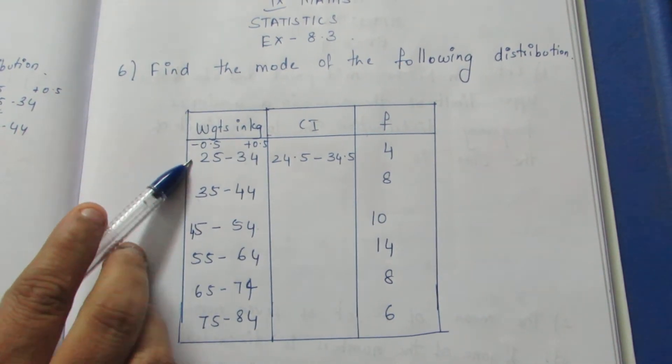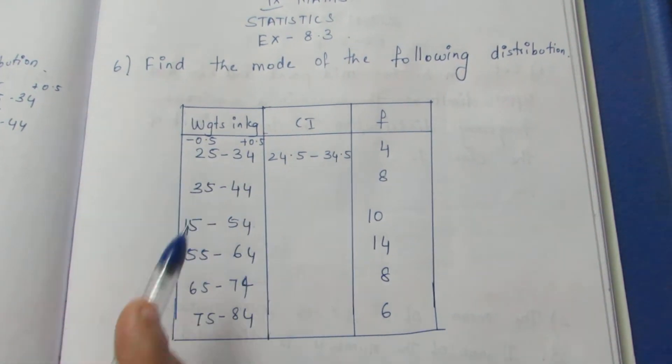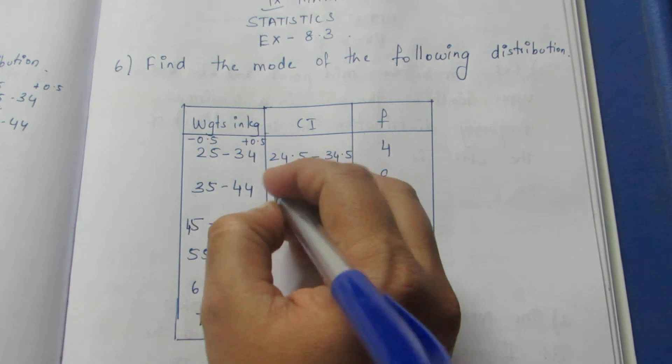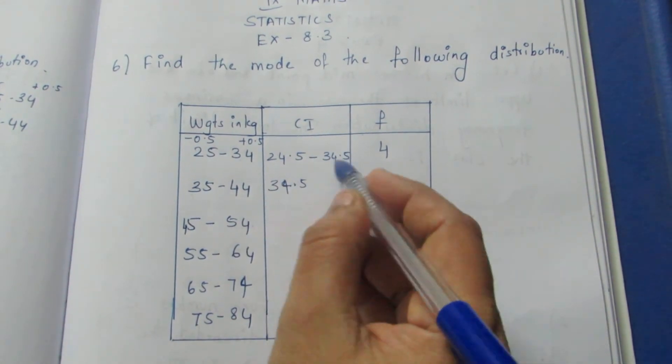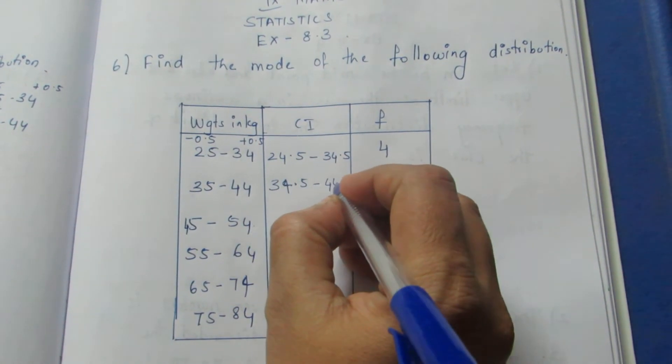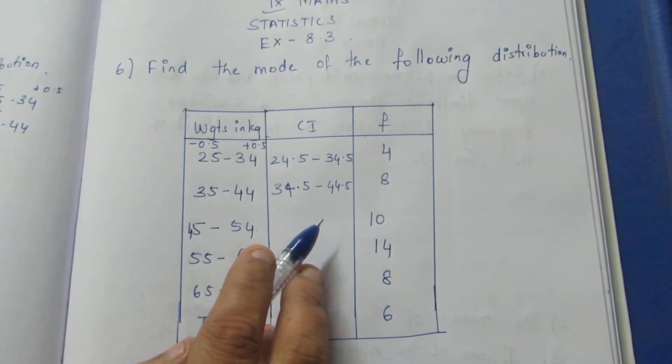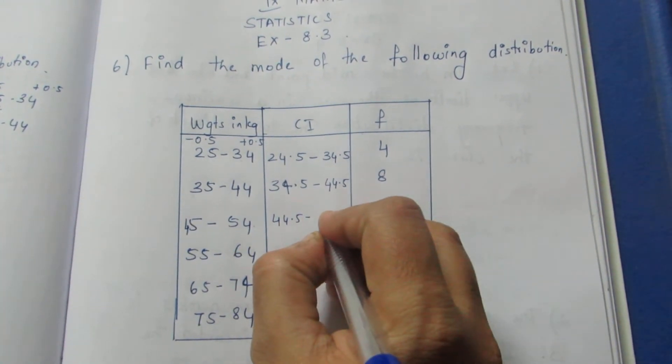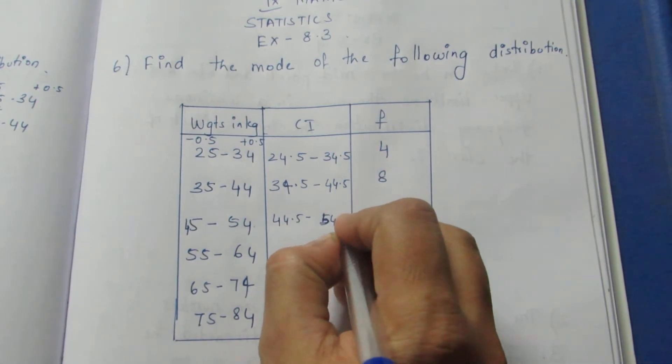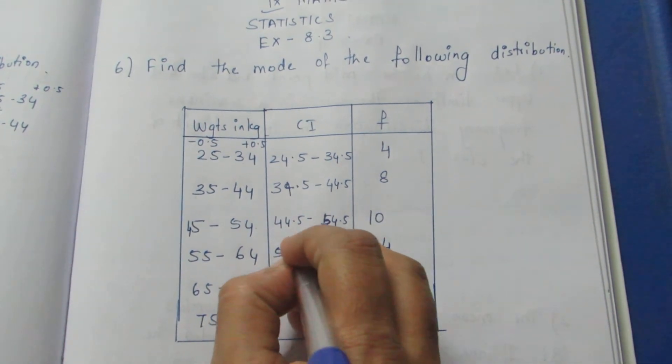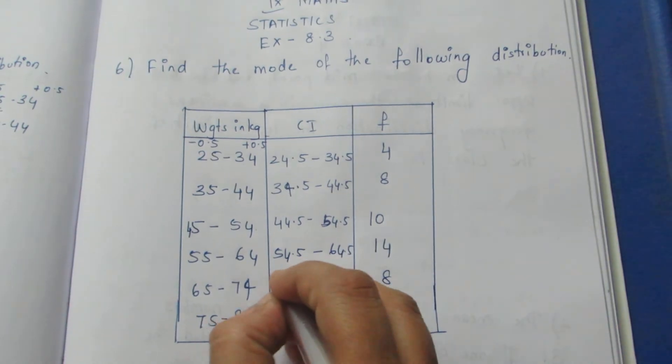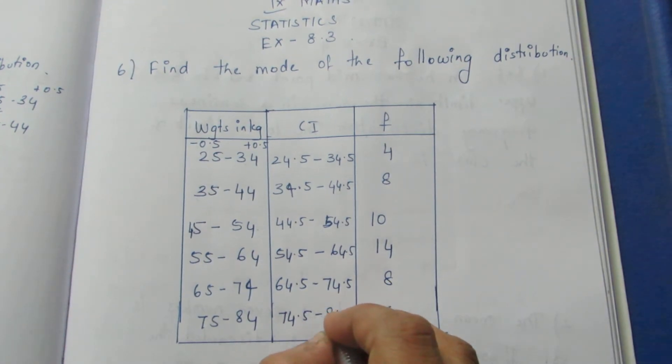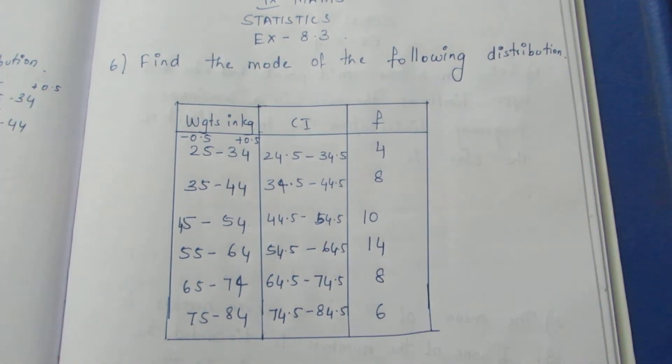So left hand side is minus 0.5 and right hand side is plus 0.5. Now, 35 minus 0.5 is 34.5. 44.5, 54.5. Next thing is 54.5 to 64.5, 64.5 to 74.5, 74.5 to 84.5.